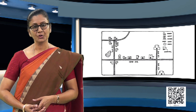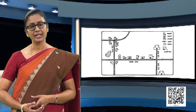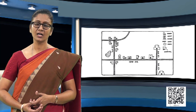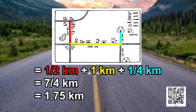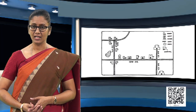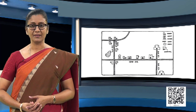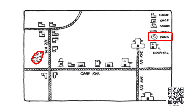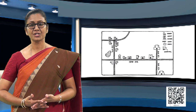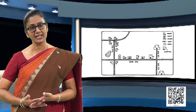Whose school is nearer to the house — Raghav's school or his sister's school? Yes, the sister's school is nearer to the house because the distance between the sister's school and the house is 1.75 kilometers, whereas the distance between Raghav's school and the house is 1.8 kilometers. By looking at the map, the landmarks between the school and the house are the pond, a post office, a shop, and a hospital. The use of landmarks and mentioning of distances has helped us to read the map easily.